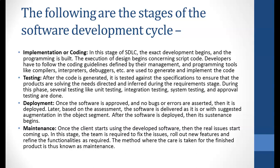Once the implementation or coding is done and tested by the developers themselves, it goes to the testing phase, where the testing team tests all the developments, configurations, and customizations done during the implementation phase. After the code is generated, it is tested against the specifications to ensure the product solves the needs directed during the requirement stage. During this phase, several types of testing are performed: unit testing, integration testing, system testing, and approval testing.